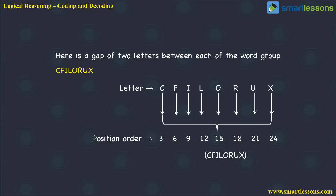Another example: C, F, I, L, O, R, U, X. C is 3, F is 6, I is 9, L is 12, O is 15, R is 18, U is 21, X is 24. This particular coding follows a pattern with a gap of three letters — 3, 6, 9, 12, 15, 18, 21, 24 — they are multiples of 3. So in this kind of coding, the difference between the numbers corresponding to the alphabets is 3, and we start from 3 and maintain a difference of 3 from the first letter.